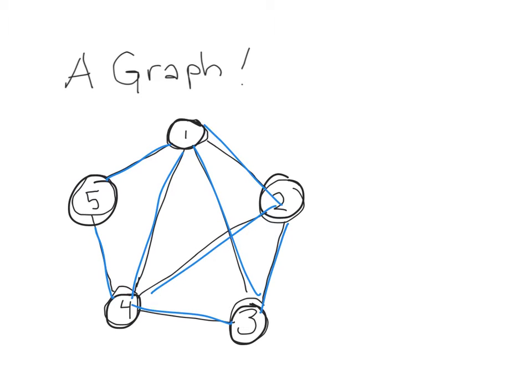Sometimes we list out the nodes and call it the node set. We can list out the edges and call it the edge set. Another important feature of a graph is the degree of each node. The degree of each node is how many edges are touching it. So if I look at node one, it has degree four. Node two has degree three. Node three has degree three. Node four has degree four. And node five has degree two.